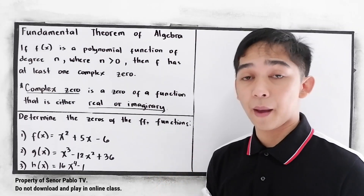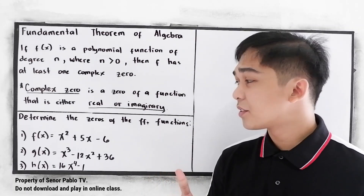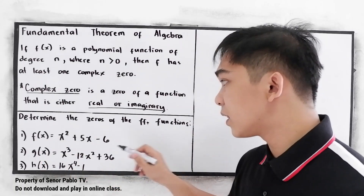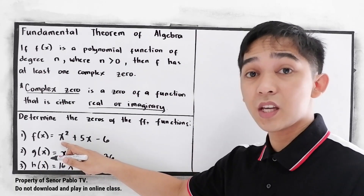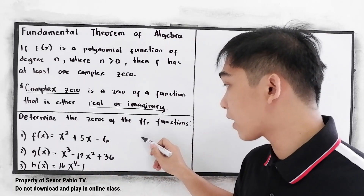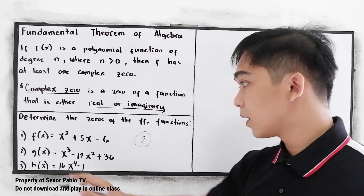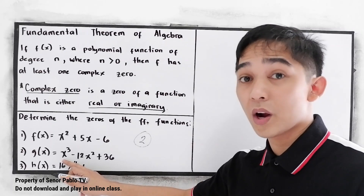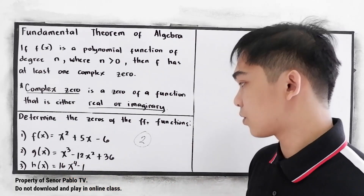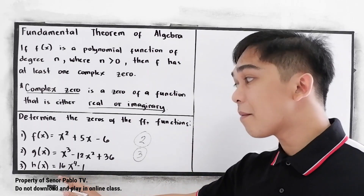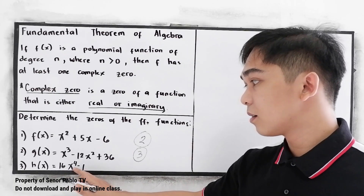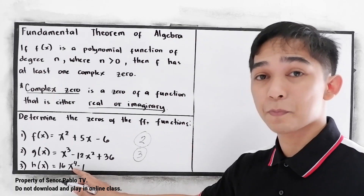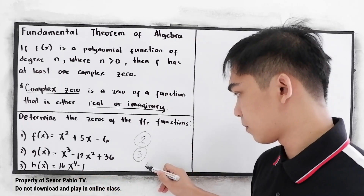Using our theorem, let's find first how many zeros we're going to expect in each problem. So in number 1, this is degree 2, so we're going to expect 2 zeros. In number 2, it is a cubic function, so we're going to expect 3 roots or zeros. And in number 3, h of x, we have a quartic function, degree 4, so we're going to expect 4 zeros.